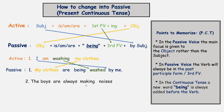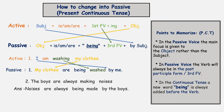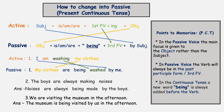Let's do another example. 'The boys are always making noises.' 'Noises' is the object, 'the boys' is the subject. The answer is: 'Noises are always being made by the boys.' Number three: 'We are visiting the museum in the afternoon.' The answer is: 'The museum is being visited by us in the afternoon.'